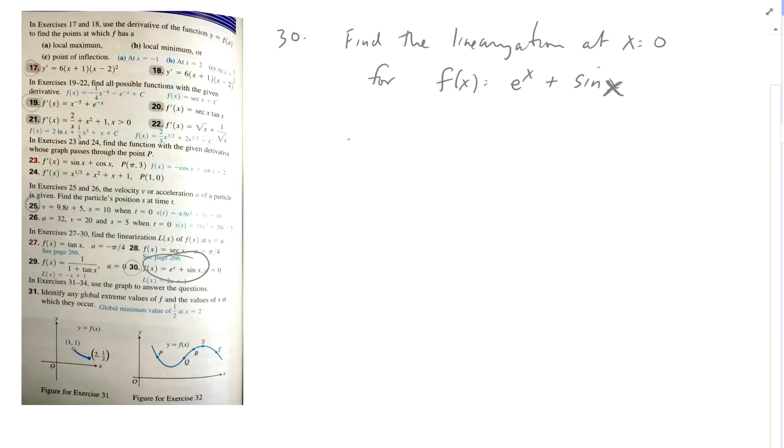So to write the equation of tangent lines, we have to know a point and a slope. Well, the point is going to be (0, f(0)).